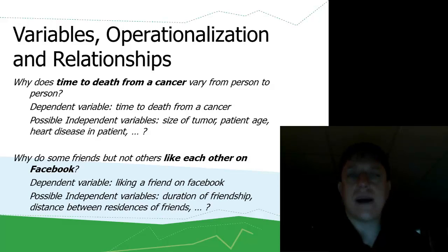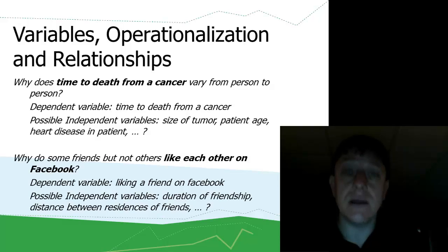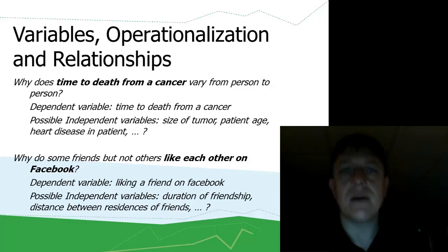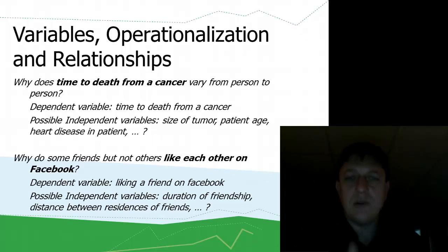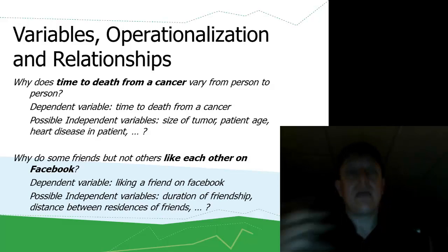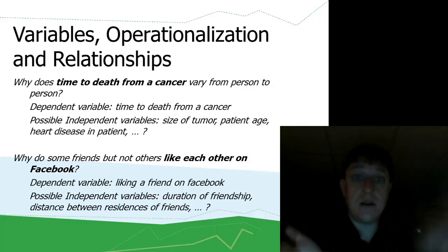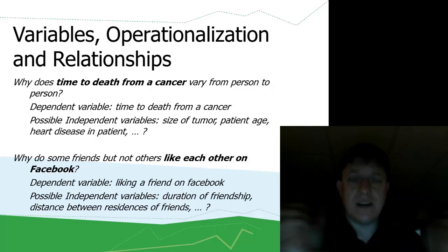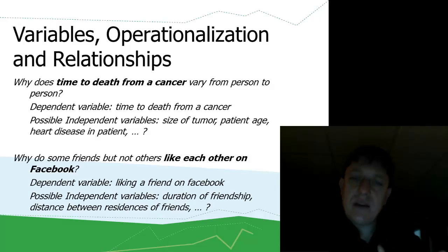Let's say we're asking: why does time to death from cancer vary from person to person? That's an important research question in the fight against cancer. If our dependent variable is time to death from cancer, possible independent variables include: the size of the tumor, measurable in centimeters; patient age in years; and whether the patient has heart disease — a dichotomous variable with two possible values, yes or no. Those are things that affect the dependent variable, or at least you think they may.